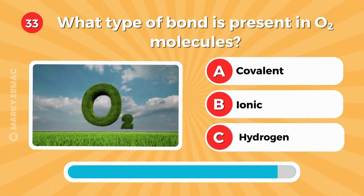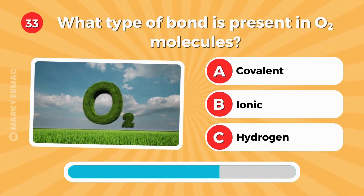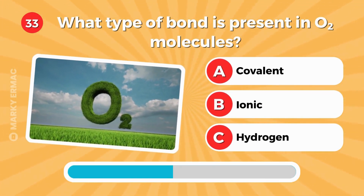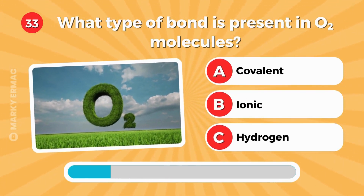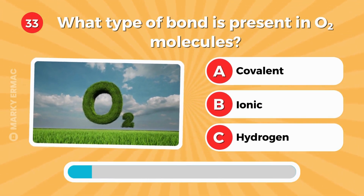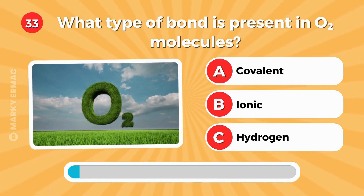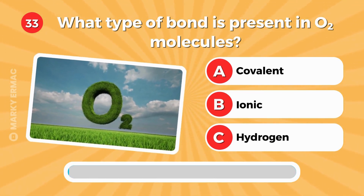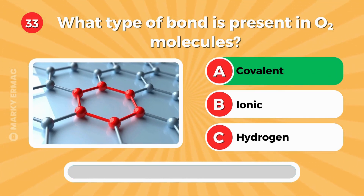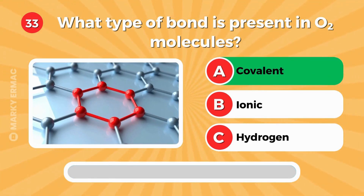What type of bond is present in O2 molecules? Letter A — covalent.